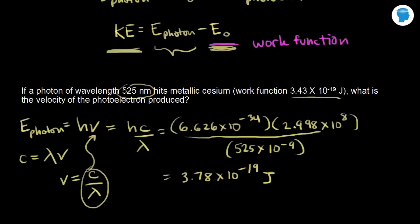Let's think about this number. 3.78×10⁻¹⁹ J is the energy of the photon, and it is greater than the work function. That means this is a high-energy photon — it's able to knock the electron free. The work function is the minimum amount of energy needed to free the electron, and we've exceeded that minimum, so we will produce a photoelectron.